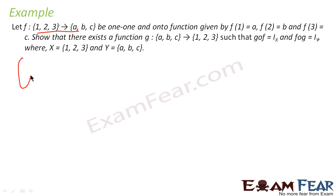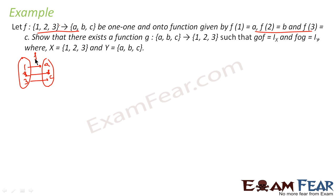There is a function f from {1,2,3} to {a,b,c}. We define: f(1) = a, f(2) = b, and f(3) = c. We have to prove that there exists a function g from {a,b,c} to {1,2,3}.